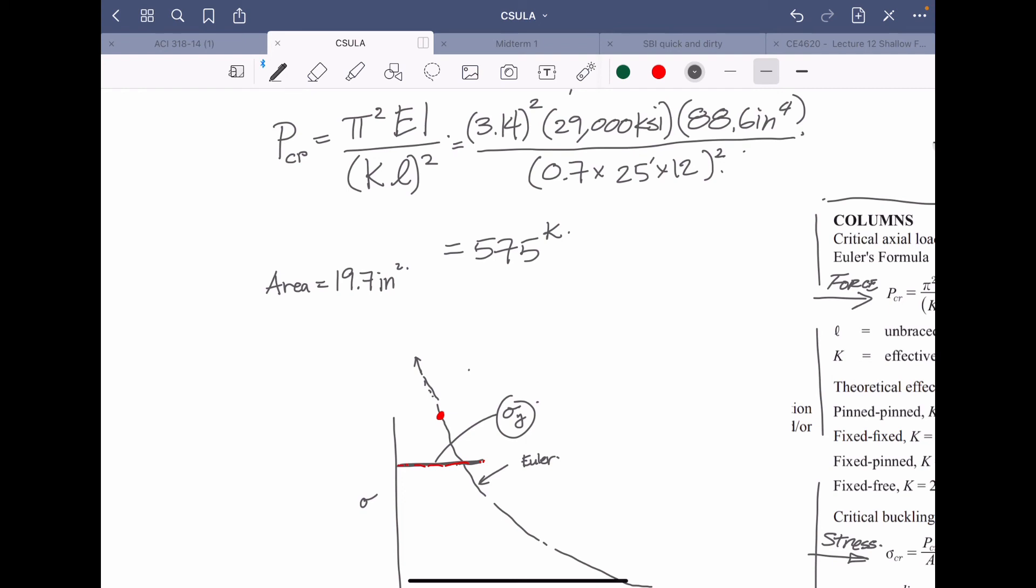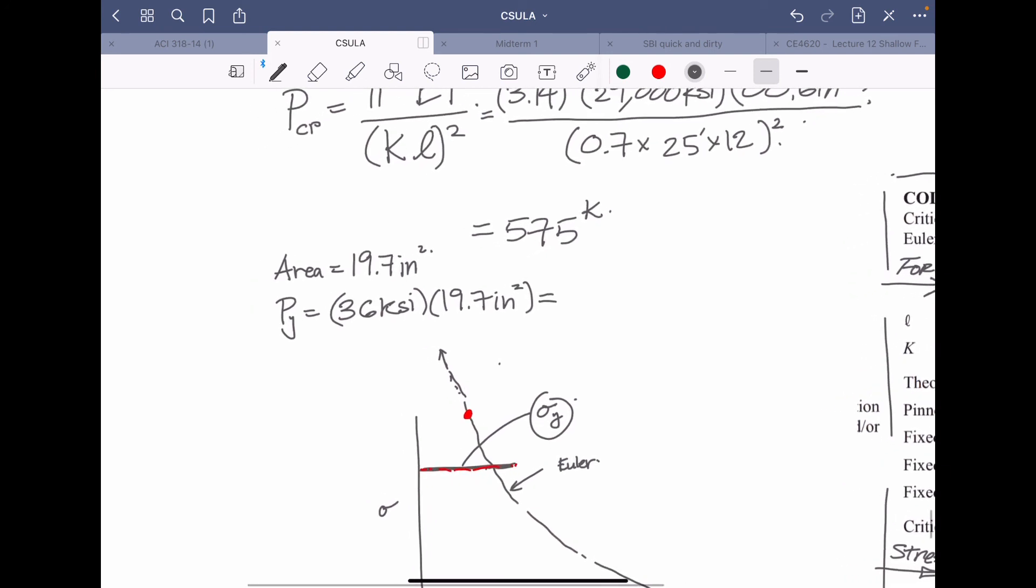So what that means is that the yielding, I would say P yield is equal to 36 KSI multiply by 19.7 inch squared. And again you could still do this without the 19.7. So I don't want people complaining saying oh I don't have an area I can't solve for it. No, well you could go solve for the stress and you can still find the answer. So it's just not as fast. And so when we do that, what does that equal to is the question. I'm getting my calculator out. So 36, so that's 709.